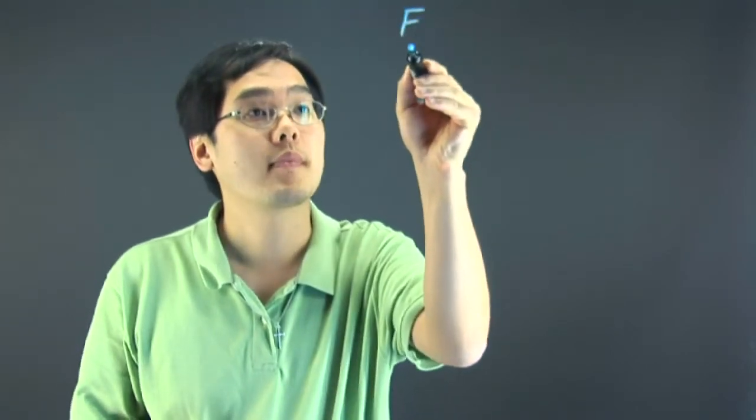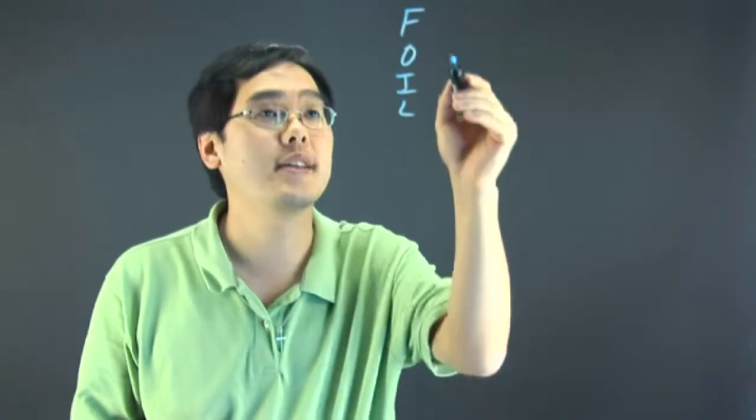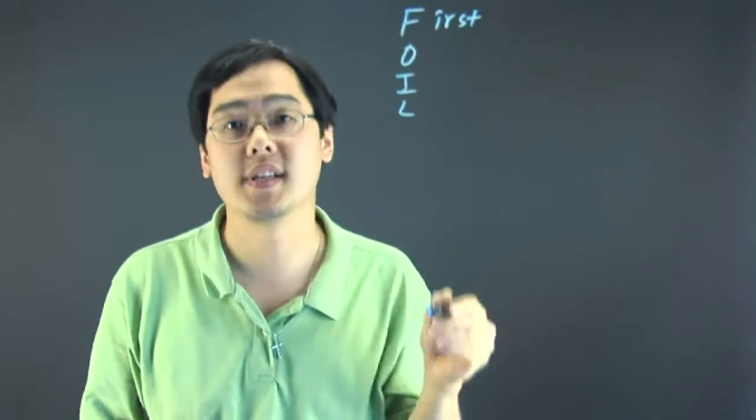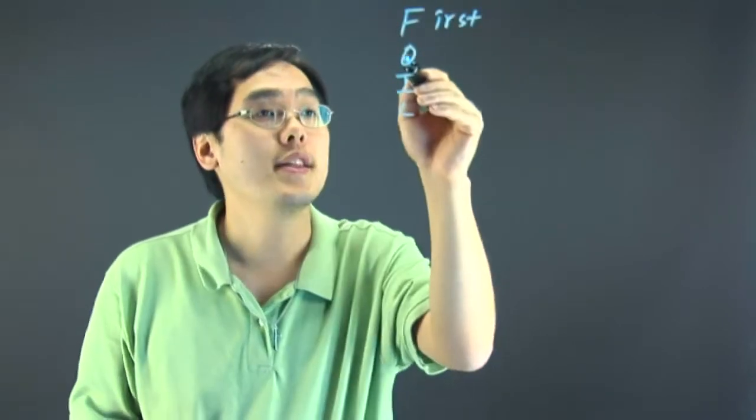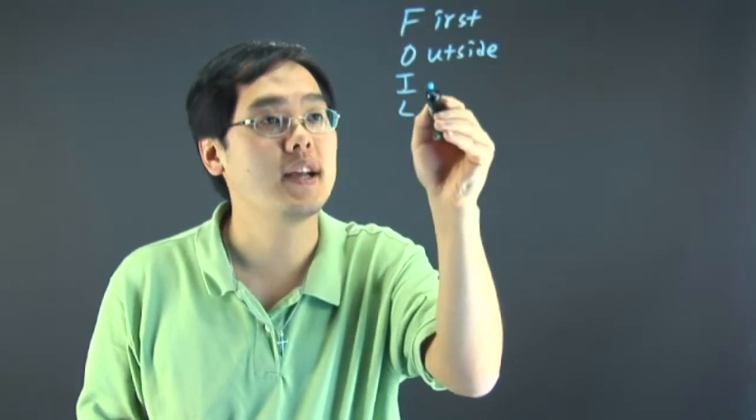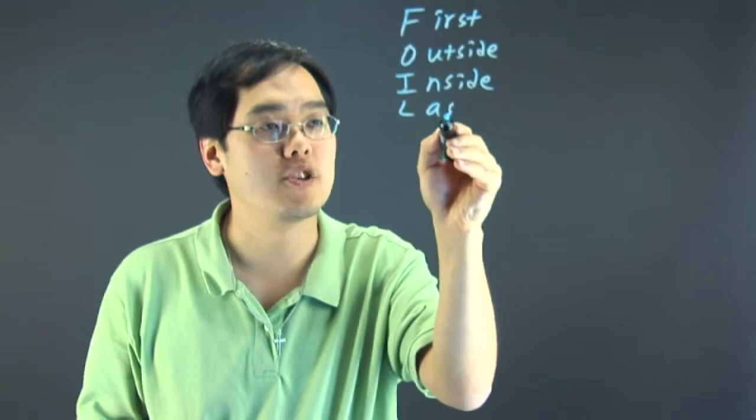Now the FOIL method uses the letters F, O, I, and L. The F stands for multiplying the first terms in each parentheses. The O stands for multiplying the outside terms. The I stands for the inside. And the L stands for the last terms in each parentheses.